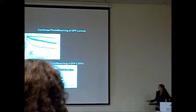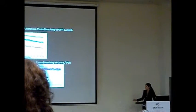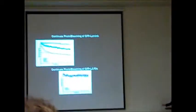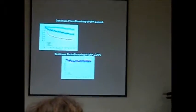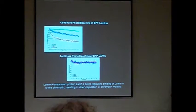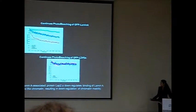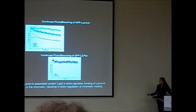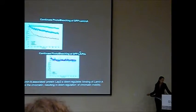Just for control, we did the same experiment with LAP2α in LAP2α depleted and normal cells, and you can see there is no difference. Blue and red curve are the same. So we can conclude that LAP2A, association protein LAP2α, down-regulates binding to lamin A, and by this, down-regulates chromatin mobility.